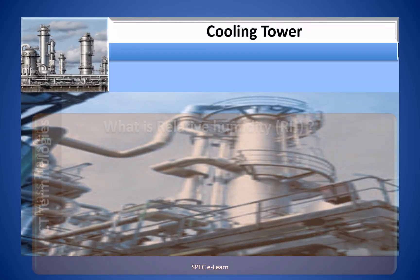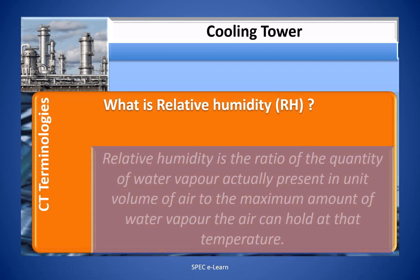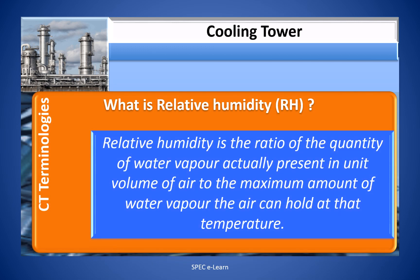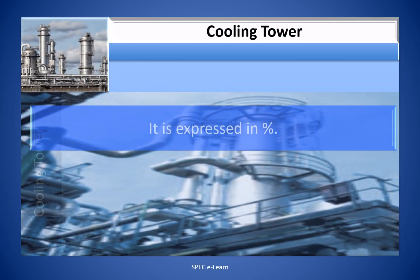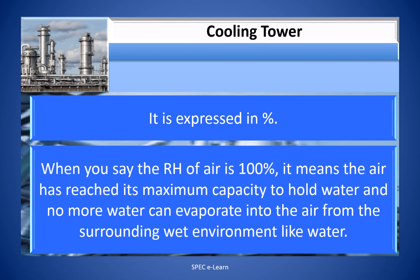What is relative humidity? Relative humidity is the ratio of the quantity of water vapor actually present in a unit volume of air to the maximum amount of water vapor the air can hold at that temperature. It is expressed as a percentage. When relative humidity is 100%, the air has reached its maximum capacity to hold water and no more water can evaporate into it from a surrounding wet environment.